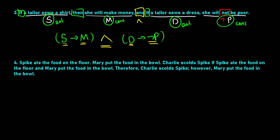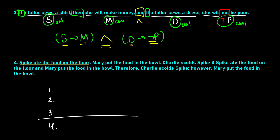Finally, this last question has multiple sentences — it's in the form of an argument. When we have an argument, we number them and list them vertically. I have four sentences, and the last one is a 'therefore.' We put a line between them to show that the first three are premises and the last is the conclusion. Sentence one: Spike ate the food on the floor — call this S. Sentence two: Mary put the food in the bowl — call this M.